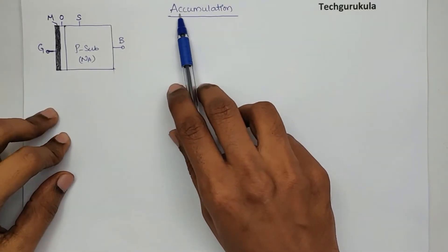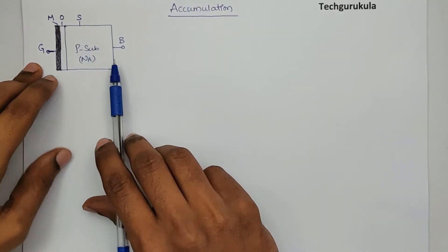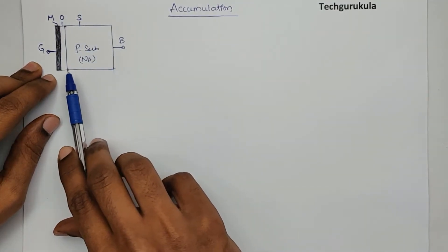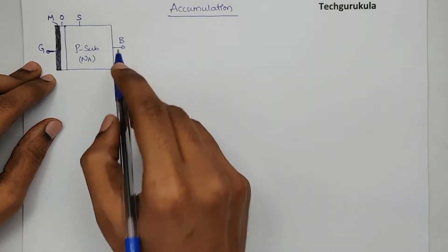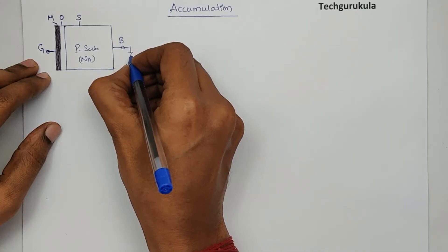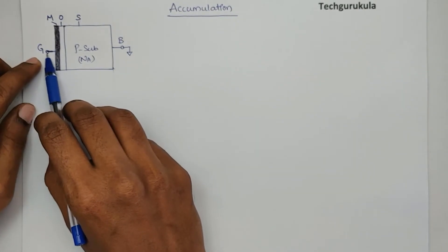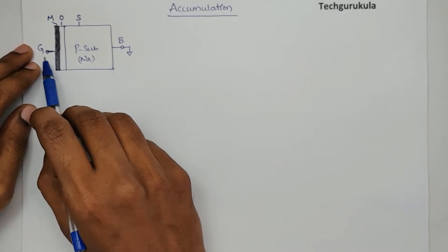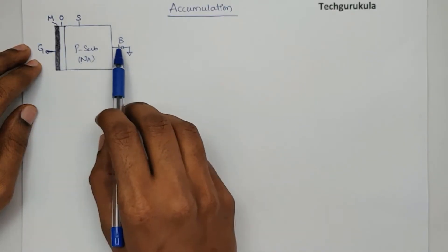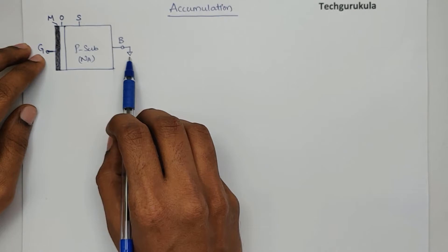In this section, we're going to see the accumulation mode of operation of a MOS capacitor. I'm taking the structure of MOS capacitor which we discussed in Ideal MOSCAP. In this case, I'm assuming the bulk terminal is grounded, and we are left with only the gate terminal at which we can apply potential. So the potential we apply at the gate will be equal to VGB, which can also be written as VG because bulk is connected to ground.